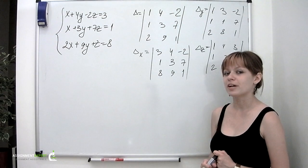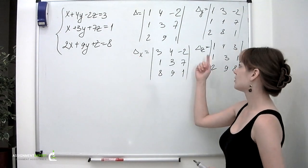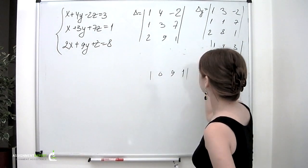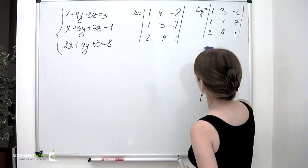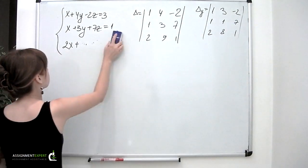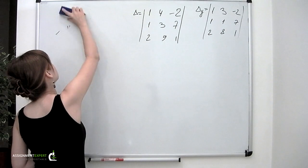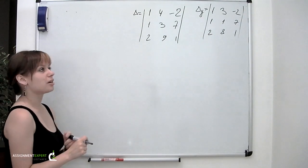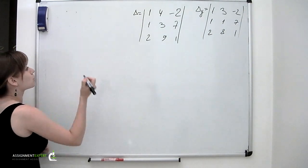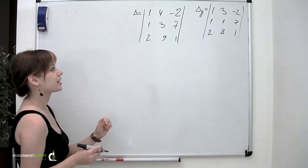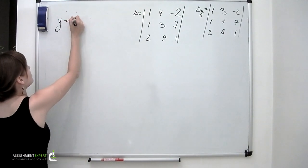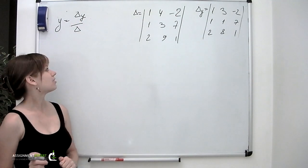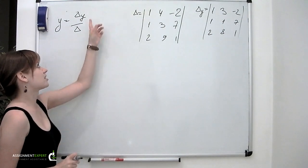Now, since our task is only to find y, we won't be needing delta_x or delta_z. According to Cramer's rule, in order to find the variable you are interested in — which in our case is y — you divide delta_y by delta. As simple as that. So basically all we have to do now is calculate these deltas.